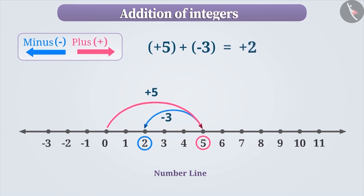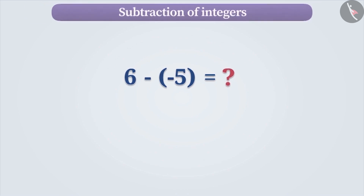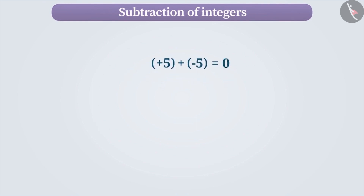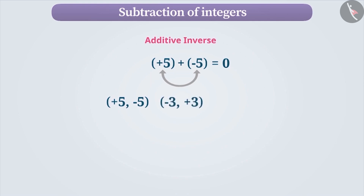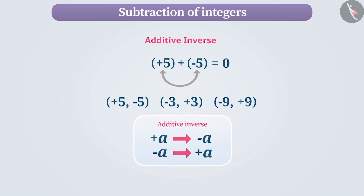Now let's learn how subtraction of integers is done. But before doing so, we need to understand one thing. If the sum of two numbers is 0, then they are additive inverse of each other. For example, plus 5 and minus 5, plus 3 and minus 3, plus 9 and minus 9, etc. Additive inverse of any number is obtained by writing it with the opposite sign. Now that that's understood, let's subtract the integers.